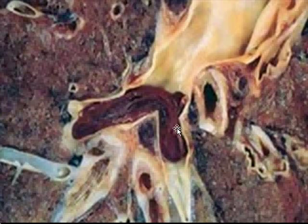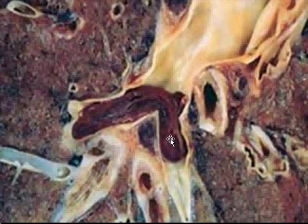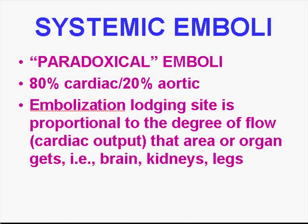Here's a saddle embolism. You can see the main bifurcation between the right and left pulmonary artery. You don't have to wonder why this patient was autopsied — a saddle embolism straddling that bifurcation is usually fatal.